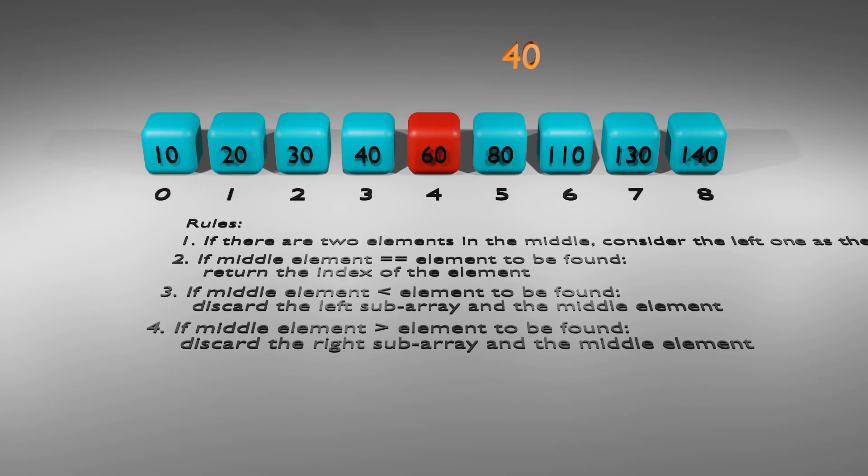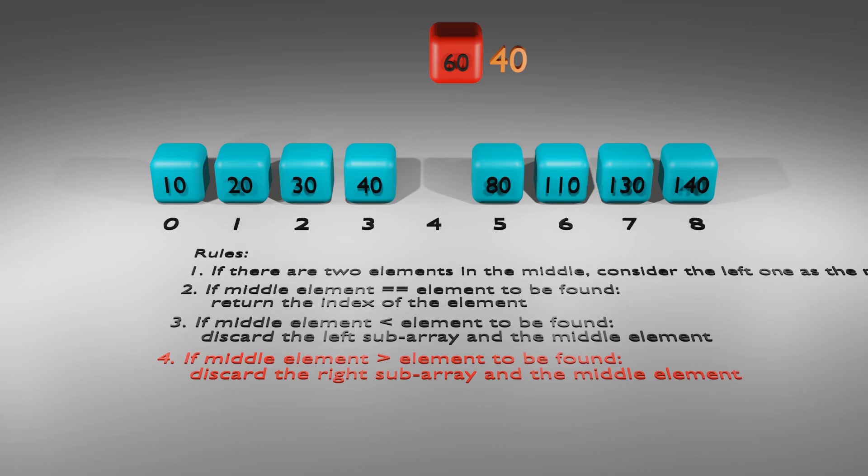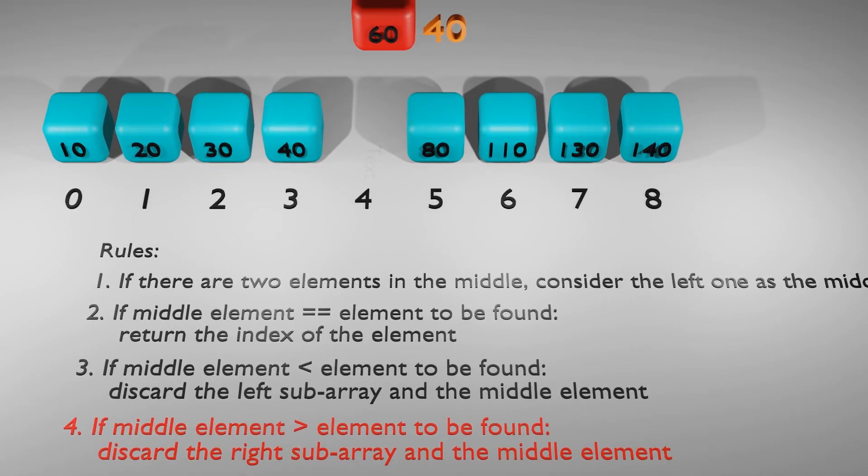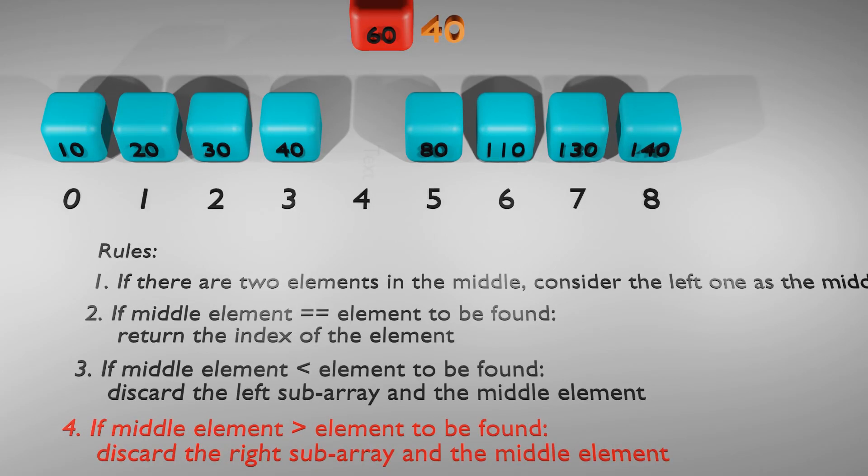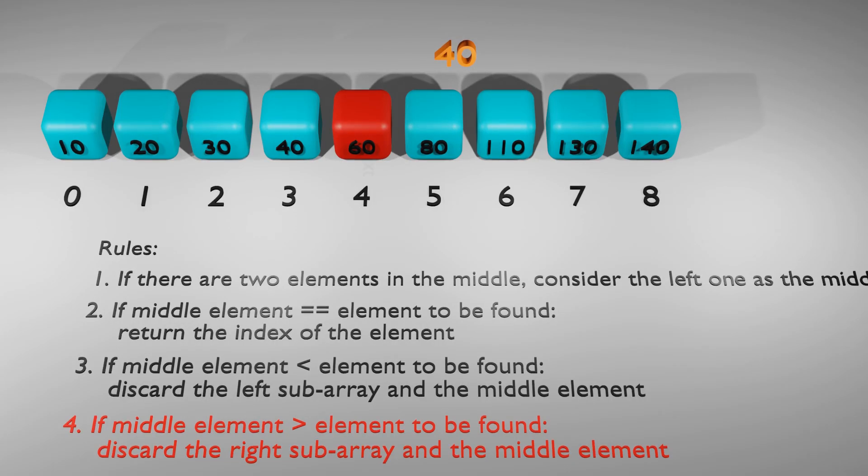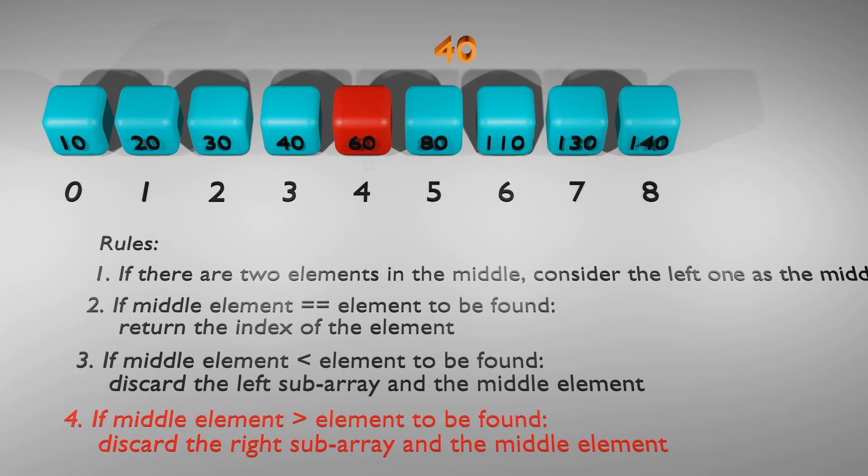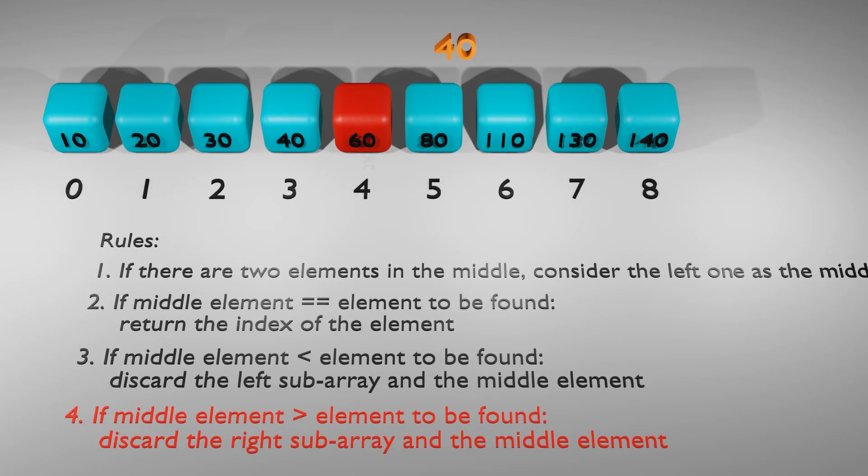Let's compare the middle number, which is 60, with the element we're trying to find, which is 40. In this case, since 60 is greater than 40, rule number four applies. According to this rule, we consider the left sub array as our new array and discard the right sub array and the middle number. This makes sense because all the elements to the right of 60 are greater than 40, including 60.